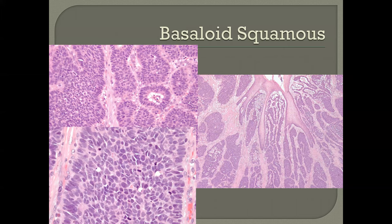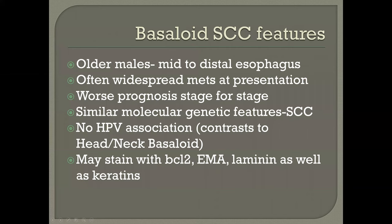One special variant of squamous cell carcinoma deserves mention: basaloid squamous carcinoma. It has a typical peripheral basal palisade of nuclei perpendicularly oriented to the stroma, surrounding more disoriented areas, with some degree of myxoid change in the stroma. This is important because the prognosis and clinical features differ — these tend to be older men in the mid to distal esophagus, often widespread on presentation. Stage for stage, the prognosis is worse. There is no HPV association.